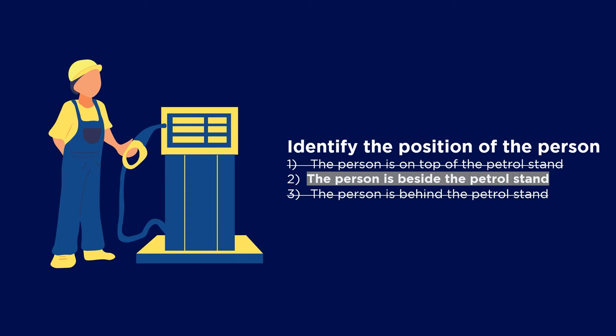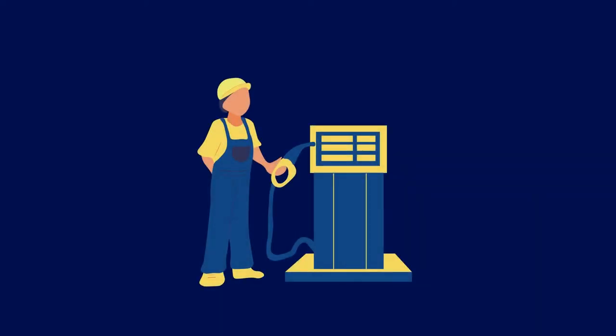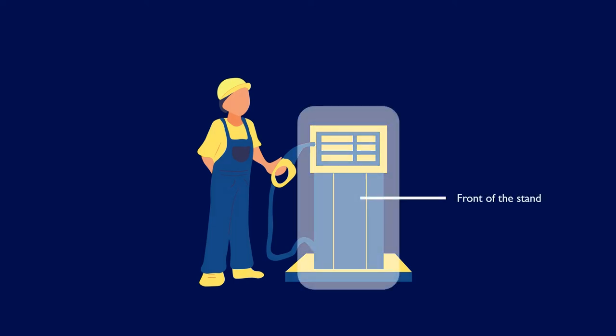If you want to be sure it is option two, the analysis could be: assuming that this is the front of the stand, being beside it would be the left and right of it. And in this case, the person is at the right of the stand. You know the position of the person by comparing him or her to another thing, person, or place, which in this case is the petrol stand.